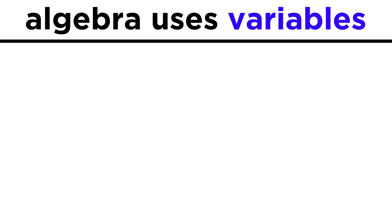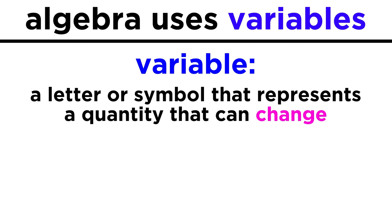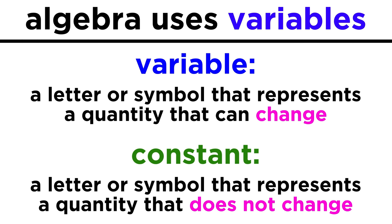First of all, what is a variable? In math, a variable is a letter or symbol that represents a quantity that can change. This is different from a constant, which is a letter or symbol that represents a quantity that does not change.